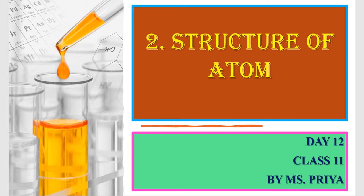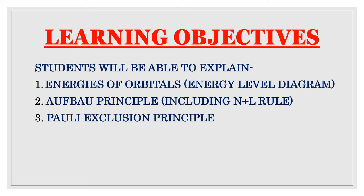Good morning students. Let us begin today's class on the topic structure of atom. I hope by now you have understood quantum numbers and are able to calculate the four quantum numbers for any given subshell. Today we are going to discuss energies of orbitals using energy level diagrams for hydrogen atom as well as multi-electron atoms, and we will also discuss the Aufbau principle including the n plus l rule and the Pauli exclusion principle.